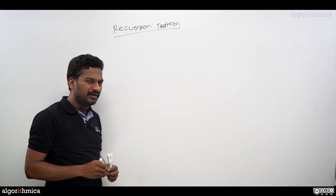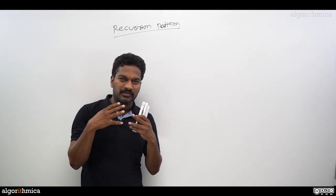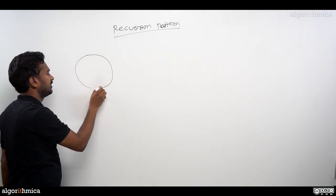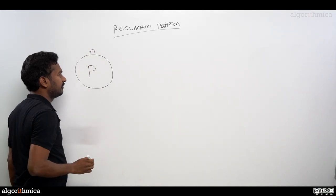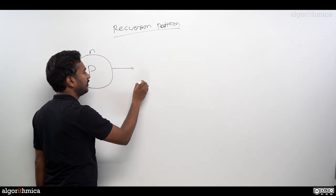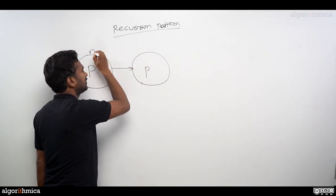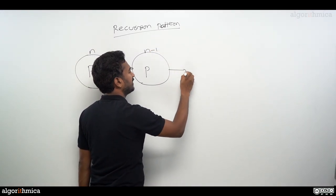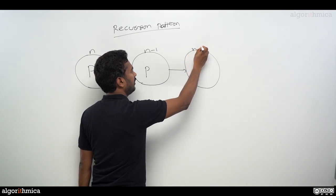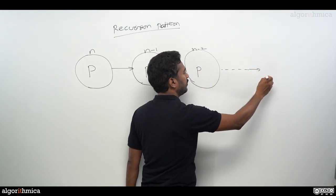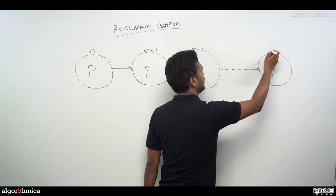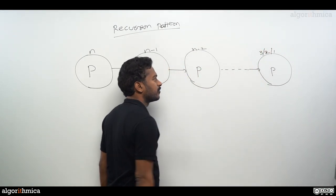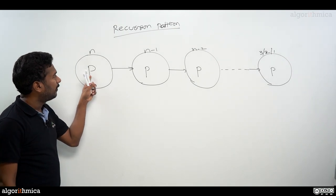So how do you really understand recursion? Recursion ideally means that when a problem is given, instead of solving the problem straight away, you try to reduce the problem. Let's say we are given a problem P of size n. What we do is try to reduce this problem — P is still the same but its size, instead of n, is reduced to n minus 1. Then again the same problem P is available but now of size n minus 2, and so on.